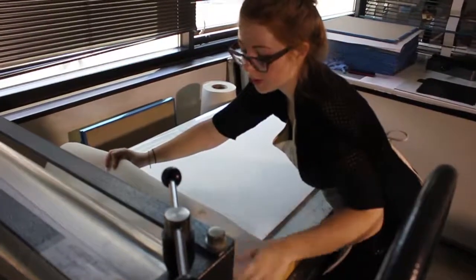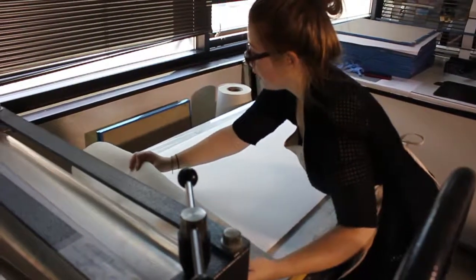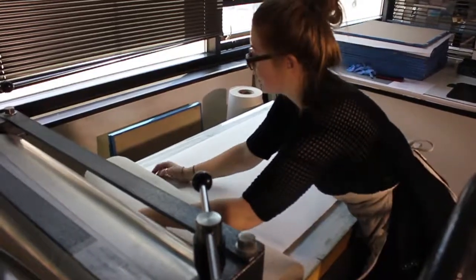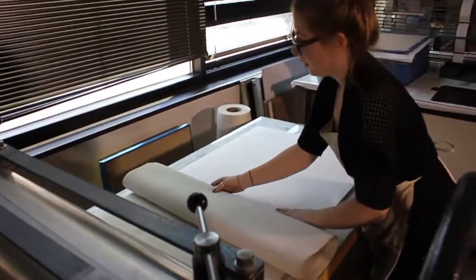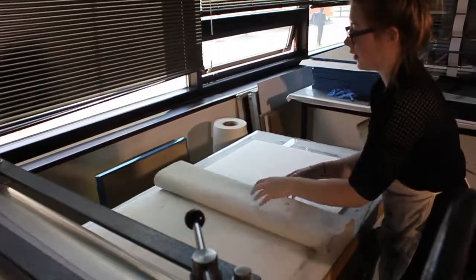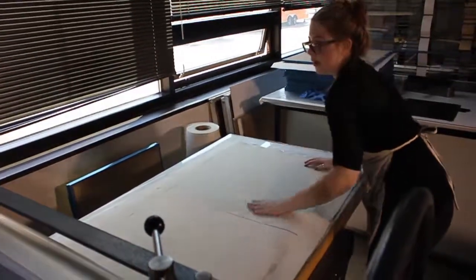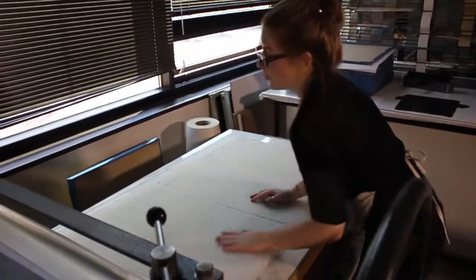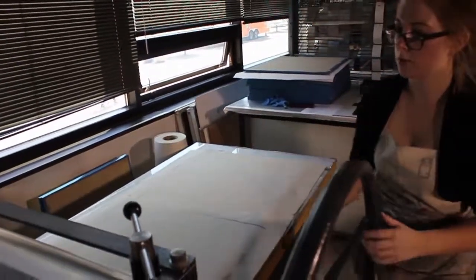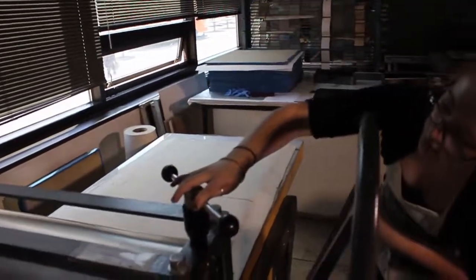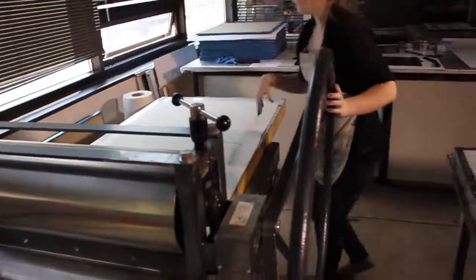And this blanket is usually one of three that are put together to allow the press to get as much pressure on your matrix as possible. But I'm just going to use one just to get a little bit more pressure. And I'm going to send it through.